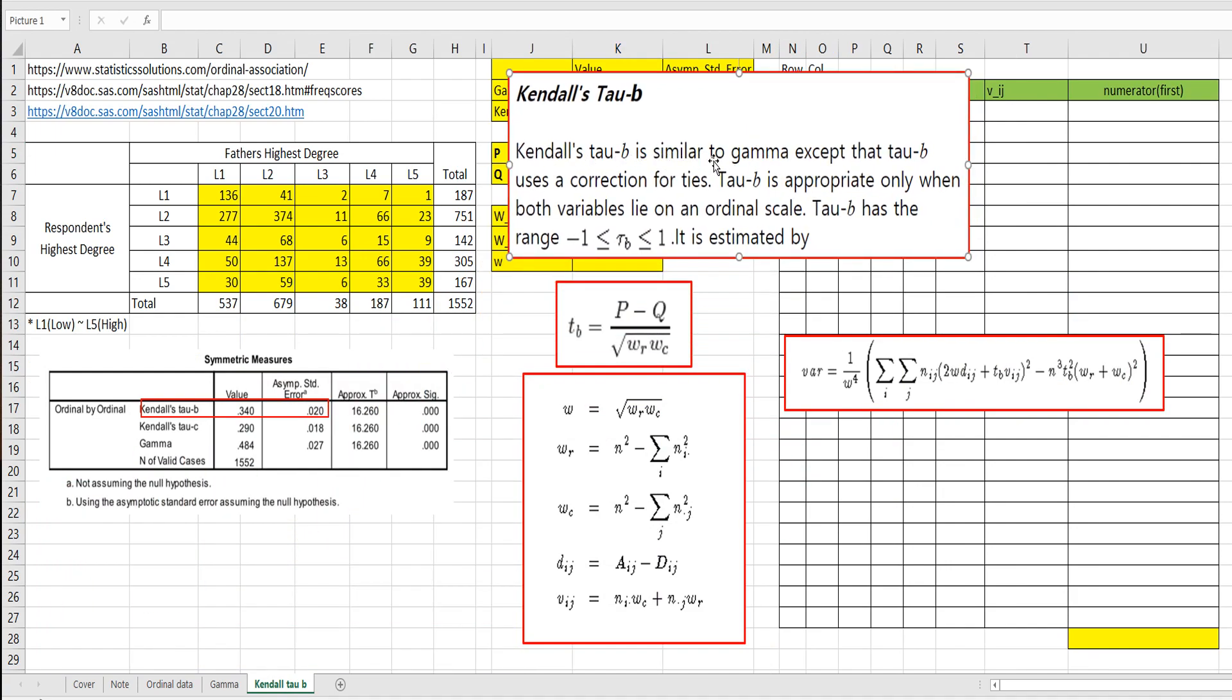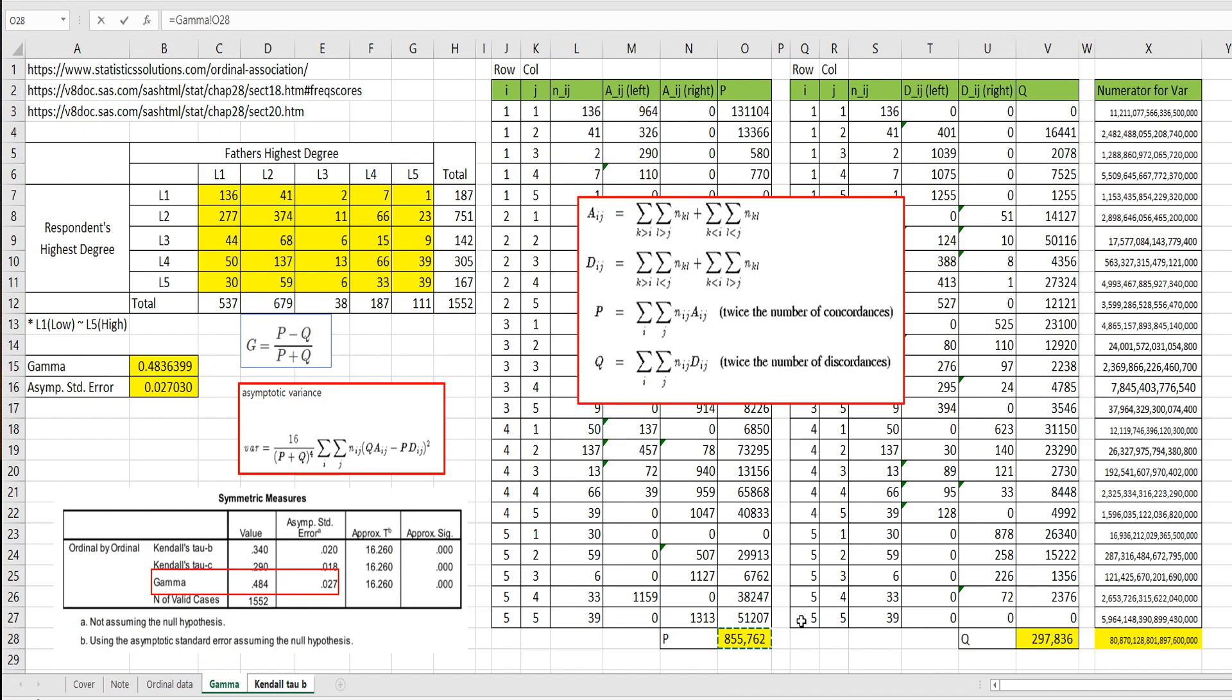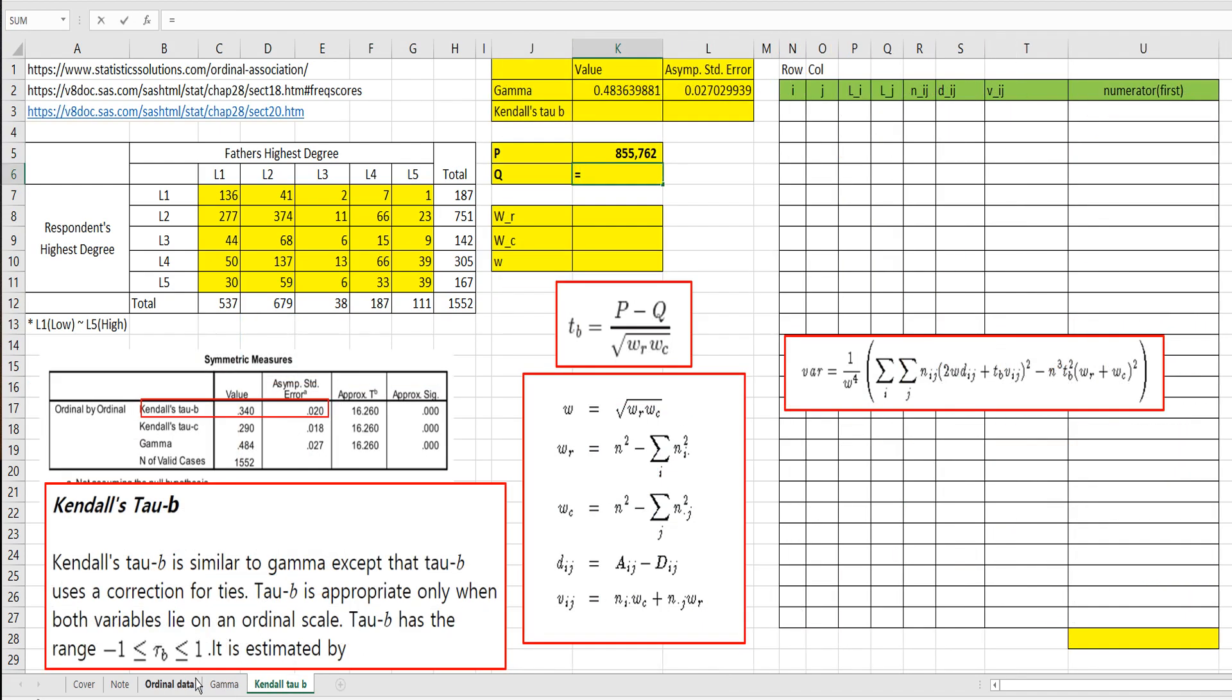Kendall's tau-b is similar to gamma except that tau-b uses a correction for ties. I will use this formula, so we need to clearly understand it. I will use same contingency table data and also will assume we have calculated concordance and discordance. For RwC, we can use this formula. There is a marginal sum of row and marginal sum of column and n squared.